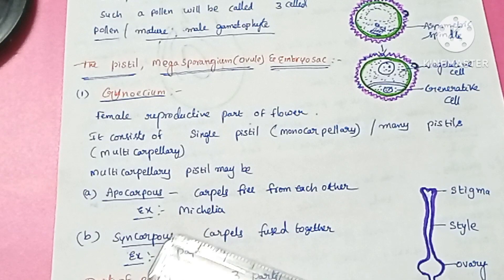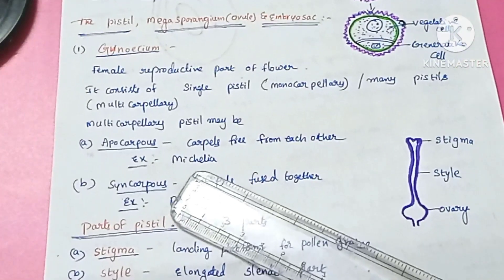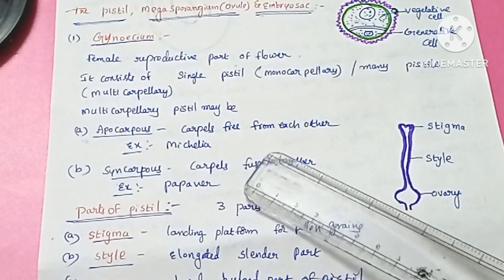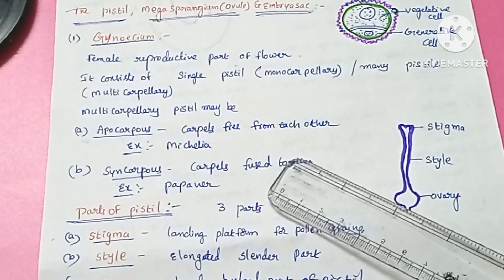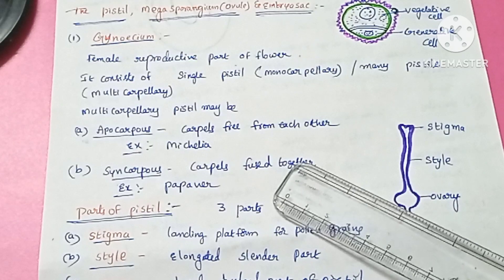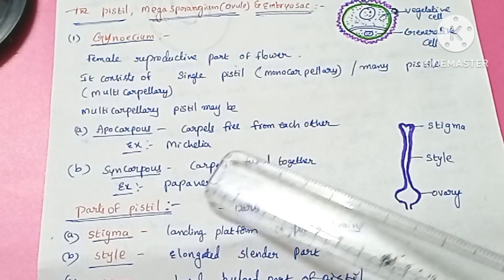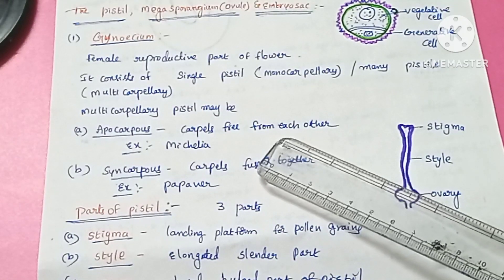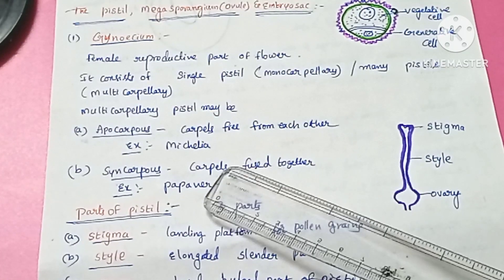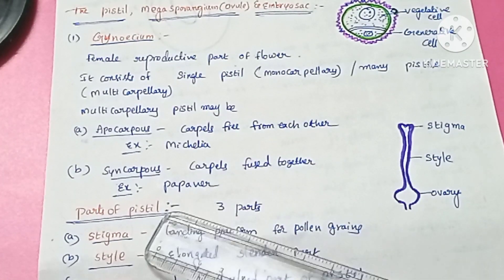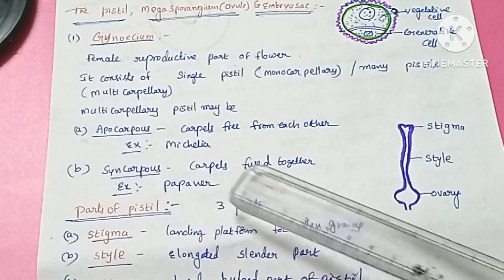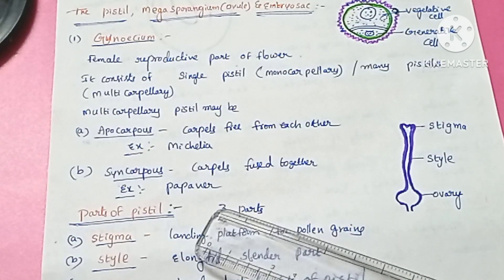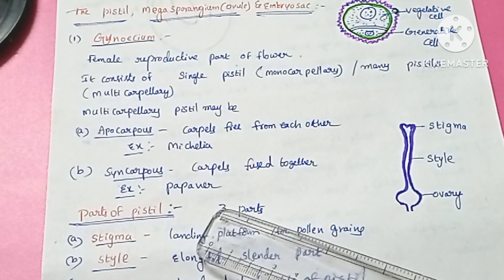In multicarpillary condition, there are two conditions: apocarpous and syncarpous. Apocarpous means the carpels are free from each other. Example: Michelia. Syncarpous means the carpels are fused together. Example: pepper.